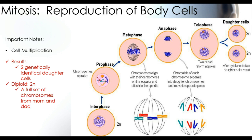The last thing about mitosis is the idea of being diploid. A diploid cell means it has two copies of each chromosome — one full set consists of a chromosome from mom and a chromosome from dad. So when we begin this process, we have a diploid cell, and when we end, we have two identical diploid daughter cells.